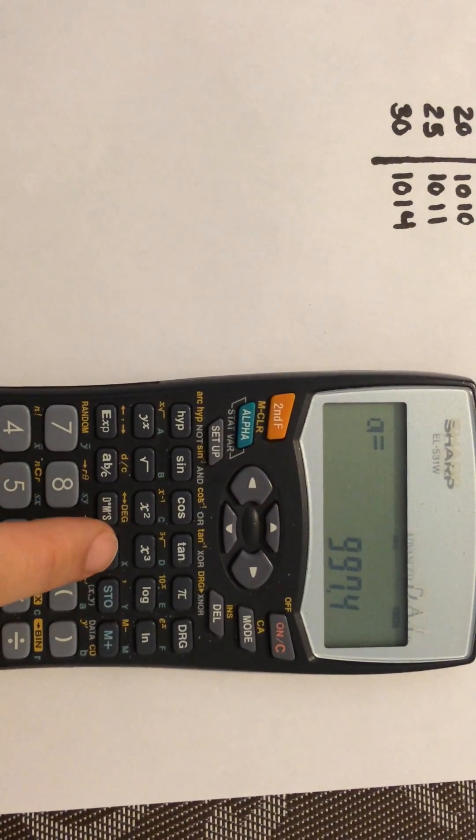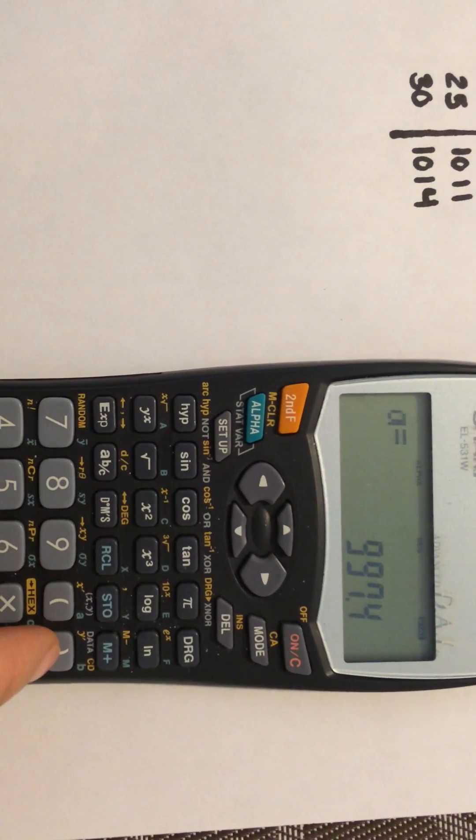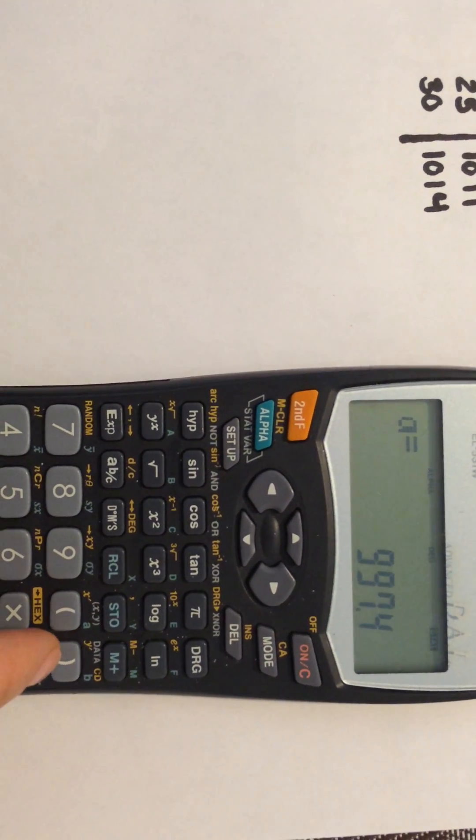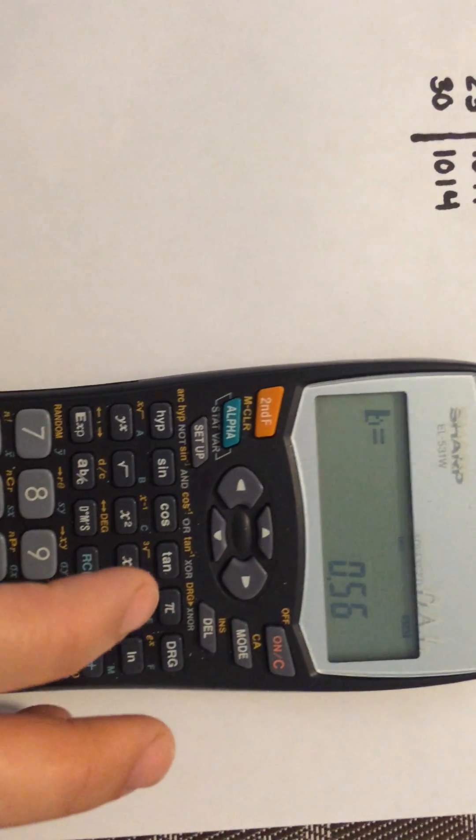Repeat to get your B value. Hit RCL, and this time it's on top of the closed bracket. The result is 0.56.